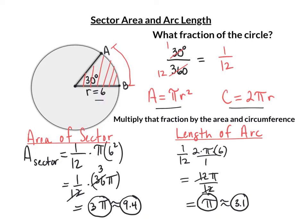The last thing to keep in mind is your units. If the radius had been 6 feet, area is measured in squares — the exact area would be 3 pi feet squared, the rounded answer 9.4 feet squared. The length is not measured in squares. If the radius was 6 feet, then the arc length would be pi feet or 3.1 feet.